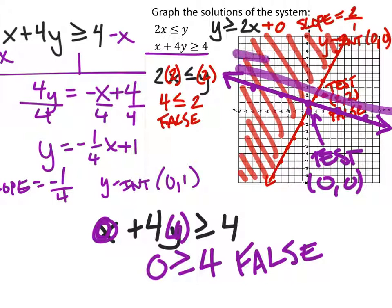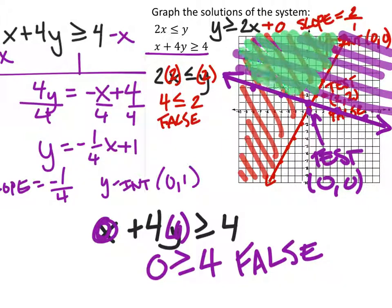And we can see that the two are shaded in this region right here. So, the green is where we would want to show that it's shaded on the test.